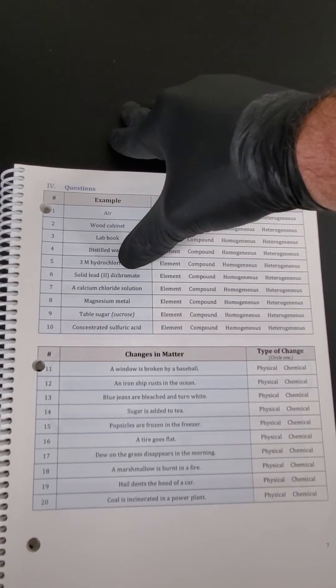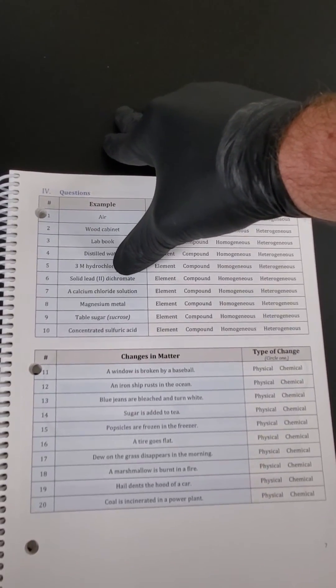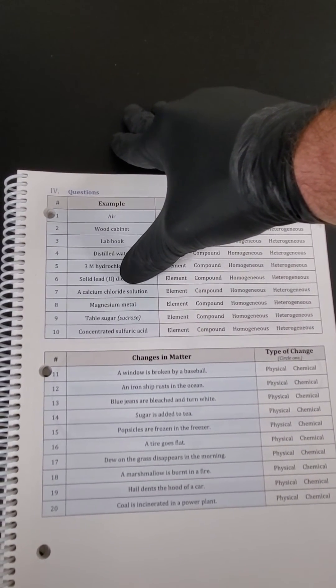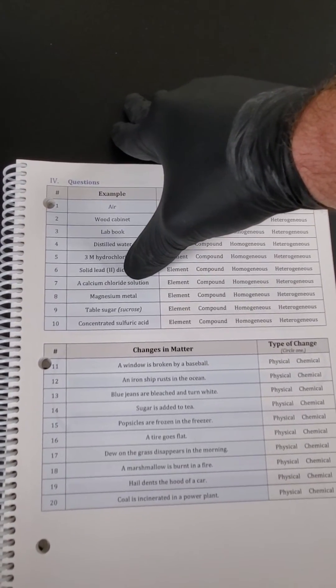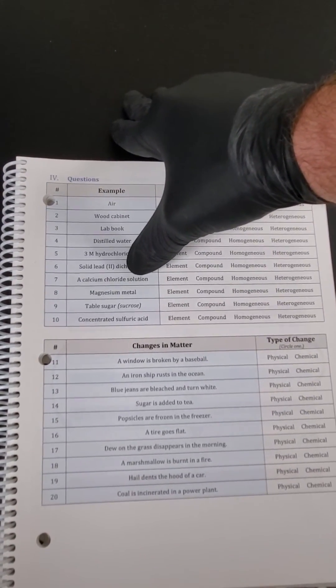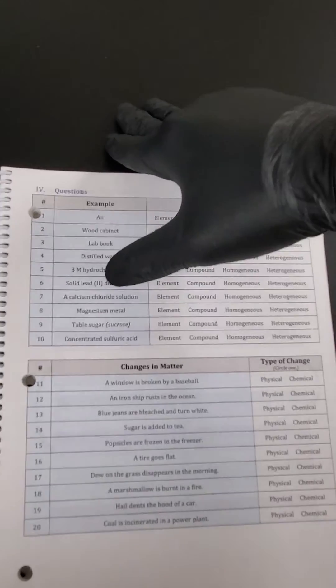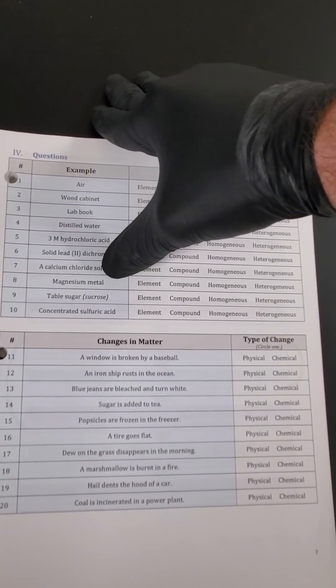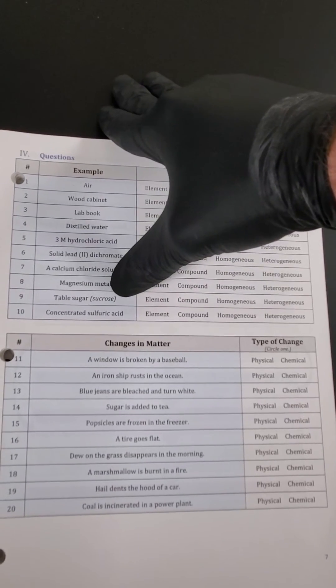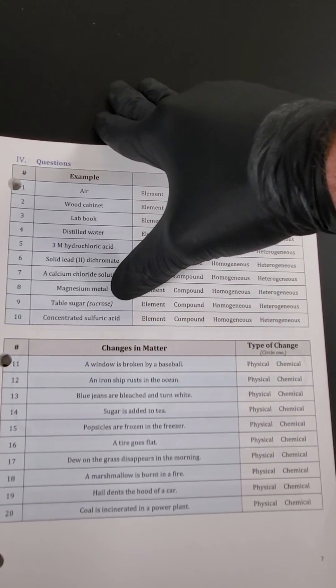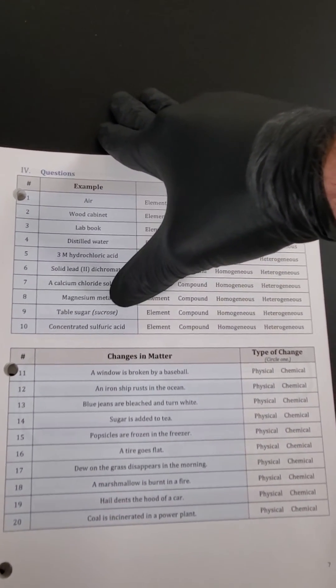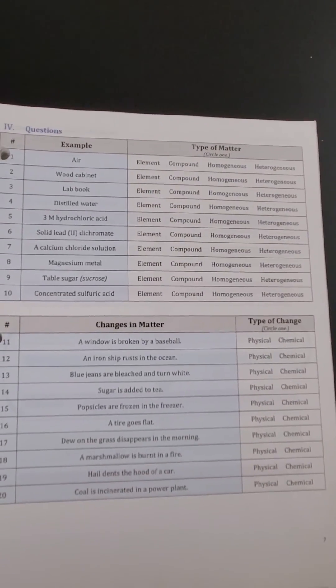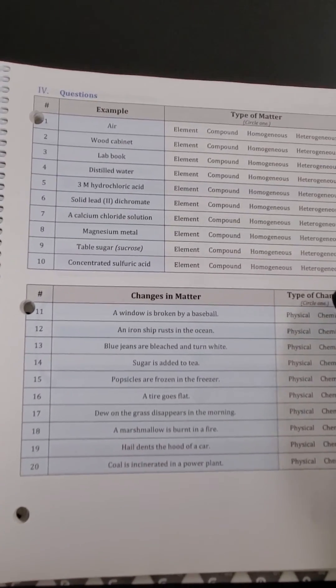Solid lead dichromate, we saw that is our product from our last experiment. That bright yellow solid that was made, this would be if it were collected. Calcium chloride solution, that was that clear solution after our calcium was created. Or at least in this case, dissolved. Magnesium metal, what we had right before we burnt it. Table sugar, straight out of the box. Although a lot harder to find nowadays. And then concentrated sulfuric acid was that syrupy liquid that we added to it.